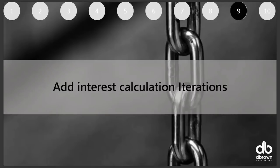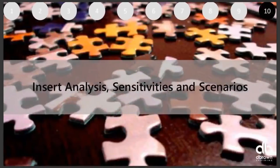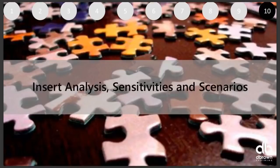The last step — step ten — after doing all of this is to insert your analysis, sensitivities, scenarios, and valuation, all those extra modules that give context to your financial model. You do scenario analysis: best case, worst case, likely case. You do your ratios — DuPont ratio, profitability ratio, asset efficiency ratios, leverage ratios. Those calculations will tell you whether your model makes sense, giving a reasonableness check. You can also add nice charts and a valuation module.